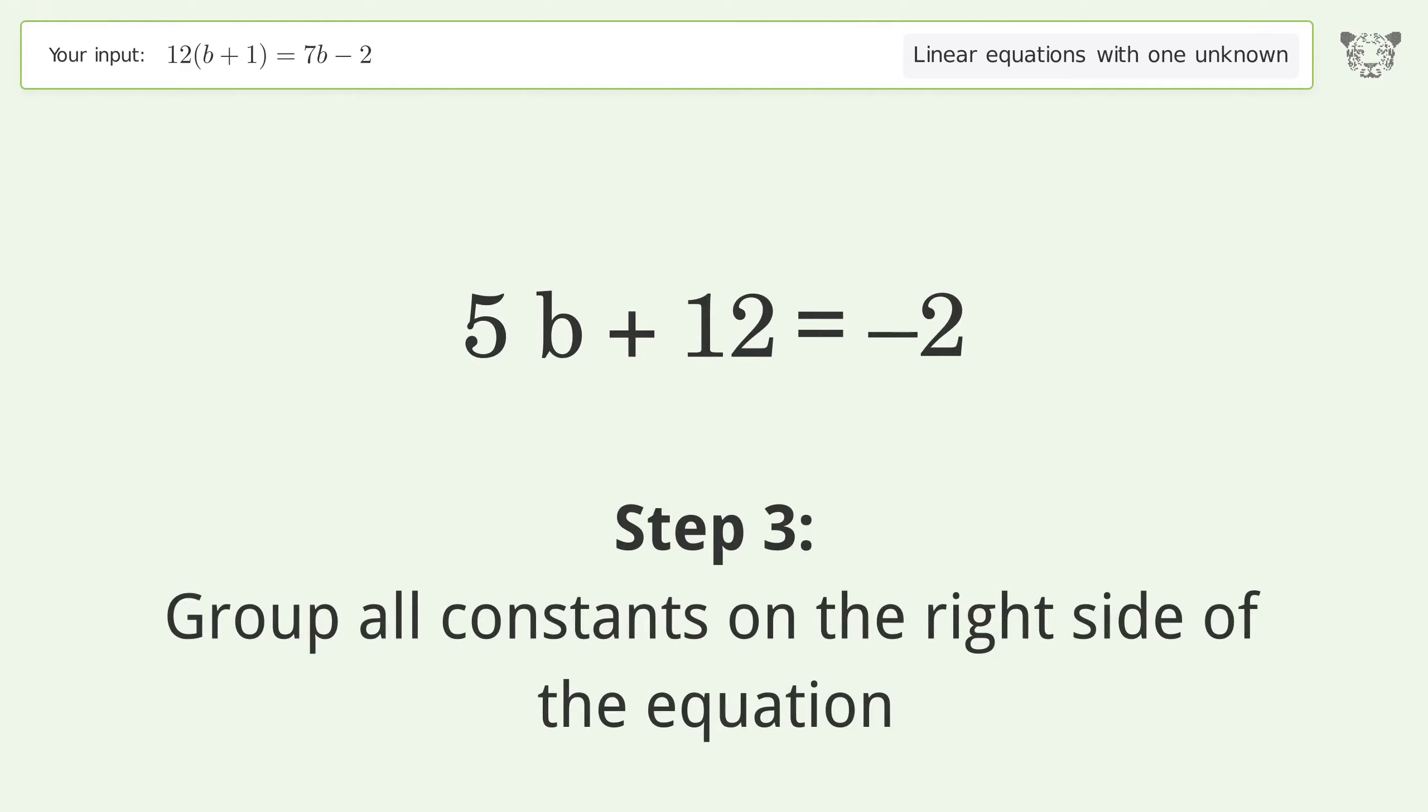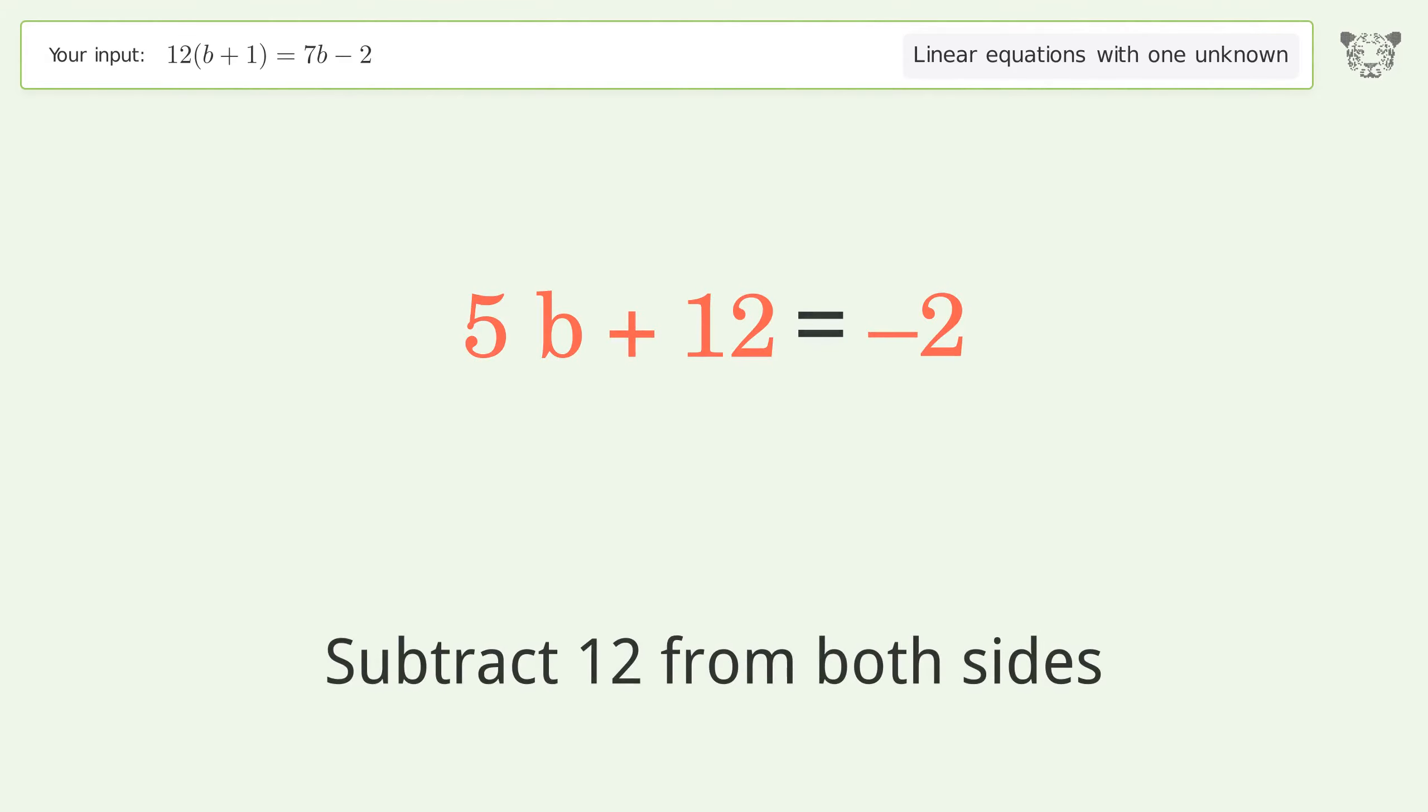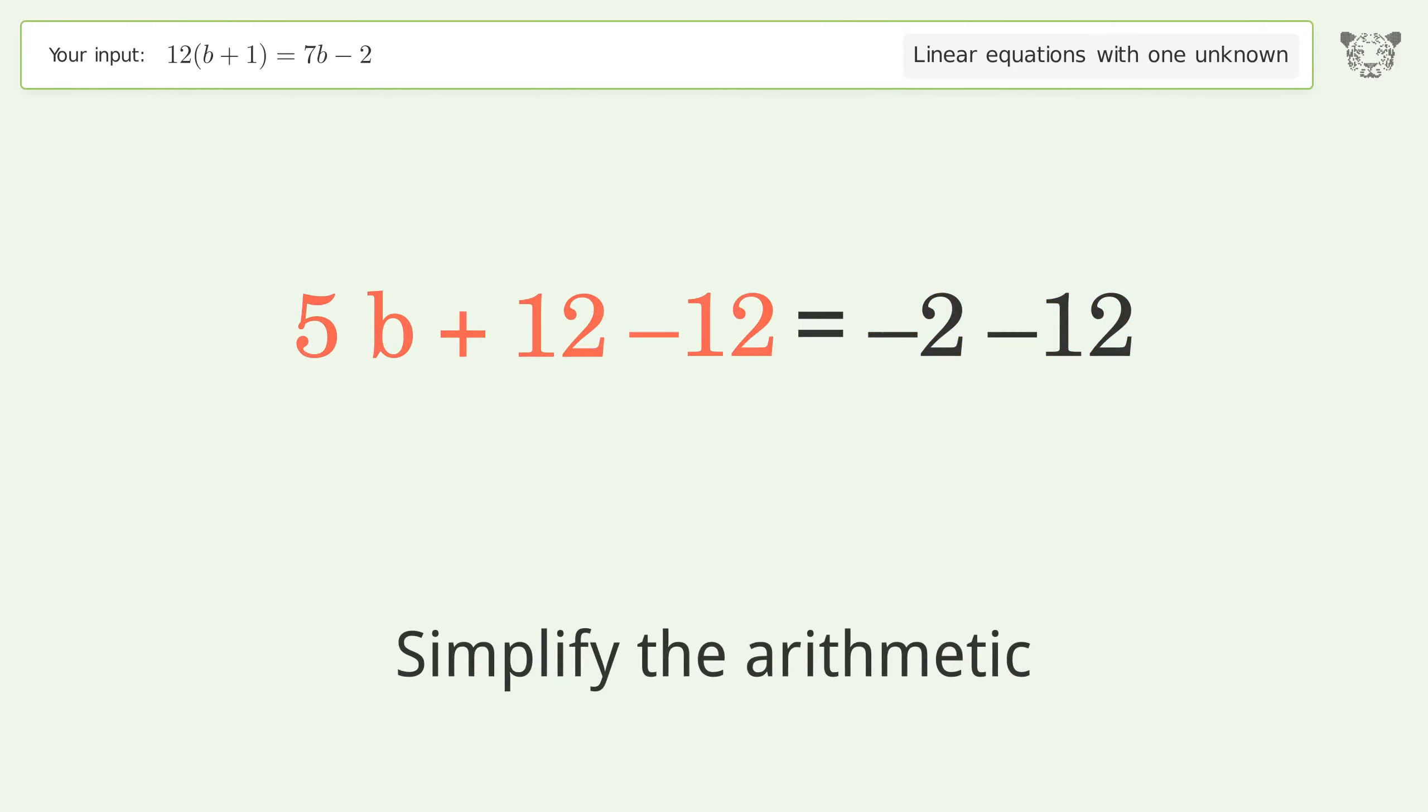Group all constants on the right side of the equation. Subtract 12 from both sides. Simplify the arithmetic.